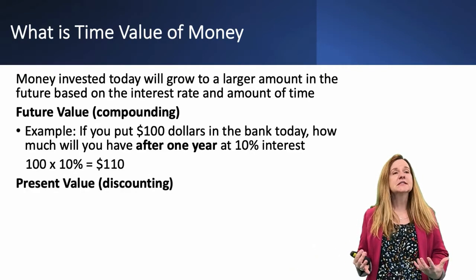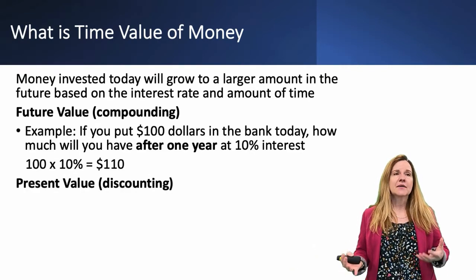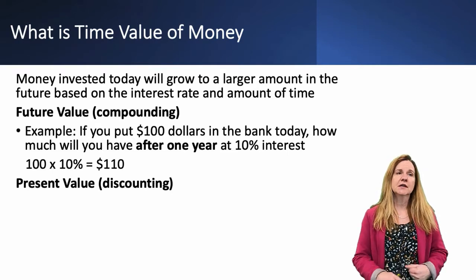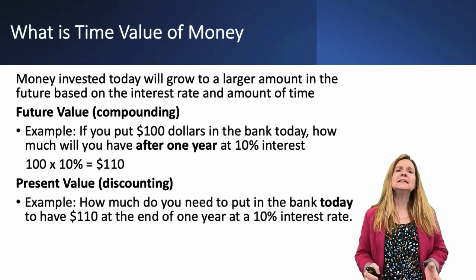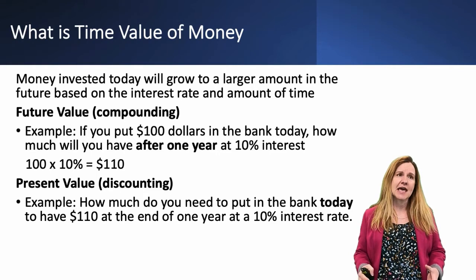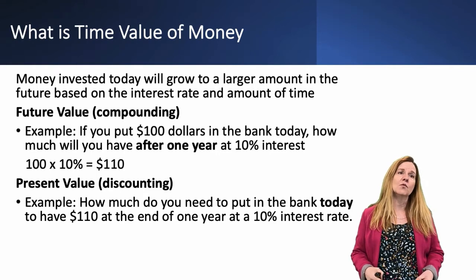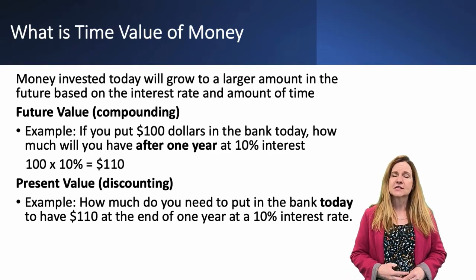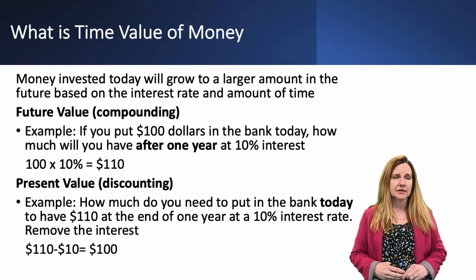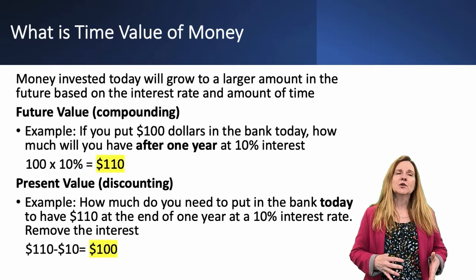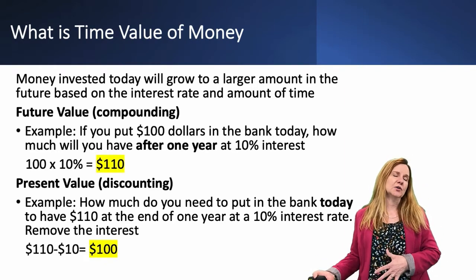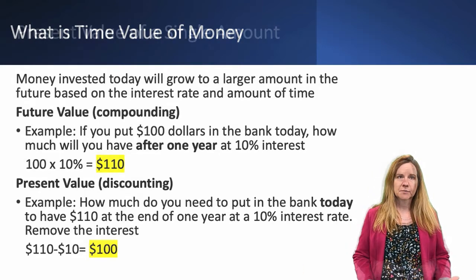Present value is called discounting. With present value, we remove the interest. So how much do you need to put in the bank today to have $110 at the end of one year at 10% interest? We are removing the interest to get to present value. Future value will always be a larger number and present value will always be a smaller number.